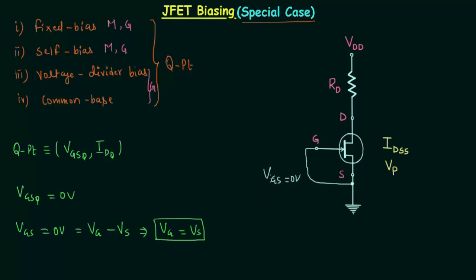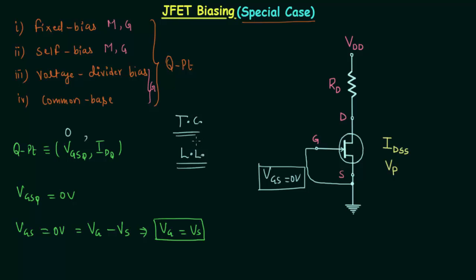The input voltage, or controlling voltage, is equal to zero volt, and you can easily find out the operating point in this case. We already know the x-coordinate of the operating point is equal to zero; we need to find the y-coordinate. To find the y-coordinate we need two plots: the first one is the transfer curve of the device — here the device is an n-channel JFET — and then we need the load line. We can easily plot the load line using VGS equal to zero volt. The transfer curve we know how to plot.